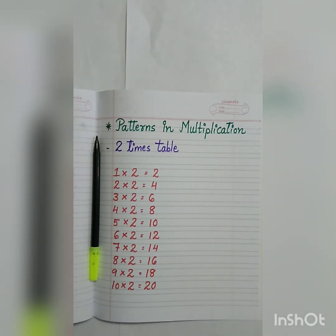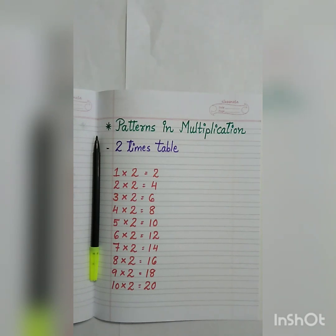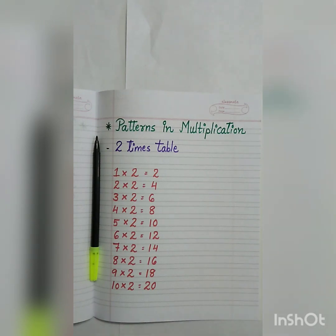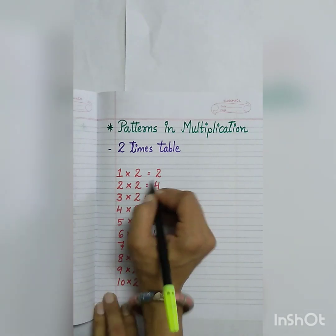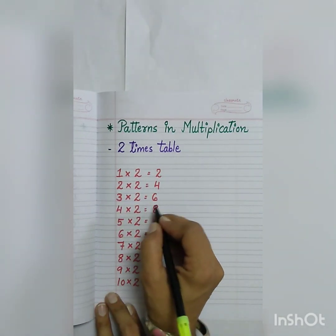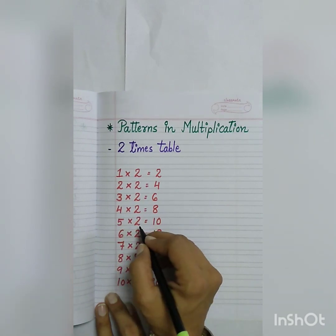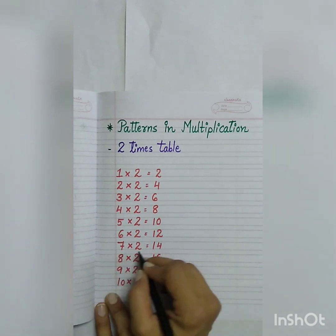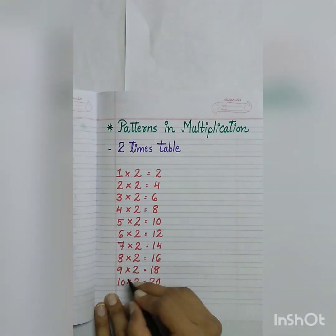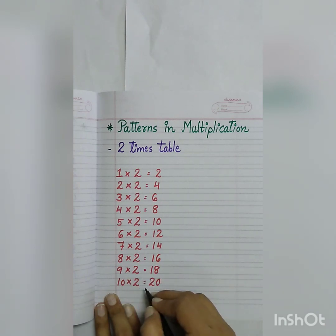We usually say the table as: two times one is two, two times two is four, two times three is six, two times four is eight. But we can also say the table in another form: one times two is two, two times two is four, three times two is six, four times two is eight, five times two is ten, six times two is twelve, seven times two is fourteen, eight times two is sixteen, nine times two is eighteen, ten times two is twenty.